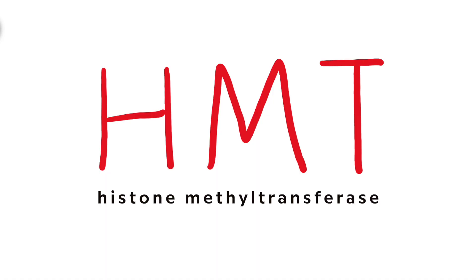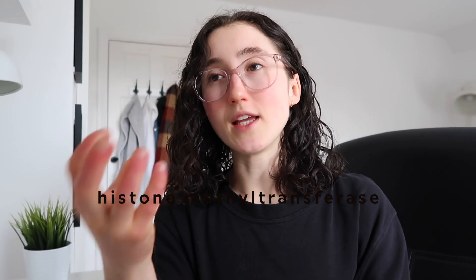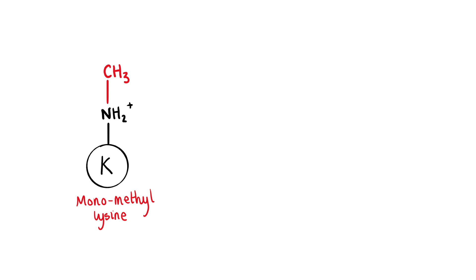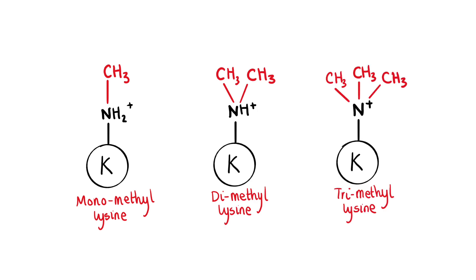Histone methylation is written by a histone methyltransferase (HMT) and removed by a histone demethylase. Importantly, histone methylation comes in different forms: monomethylation, dimethylation, and trimethylation, denoted as me1, me2, or me3. Unlike histone acetylation, histone methylation normally has an indirect effect on gene expression. Also unlike acetylation — which almost always increases gene expression — histone methylation has more variable effects: it can increase or silence gene expression depending on context.